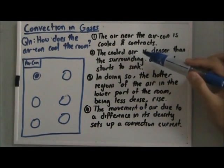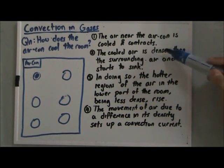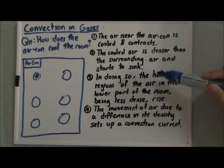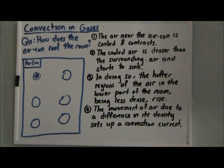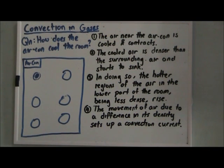This cool air is denser than the surrounding air and starts to sink. The reason is because when the air contracts, the volume decreases and the mass remains the same. So density, which is equal to mass over volume, will increase.